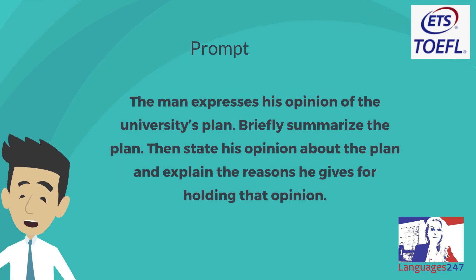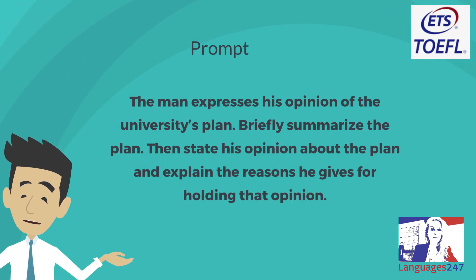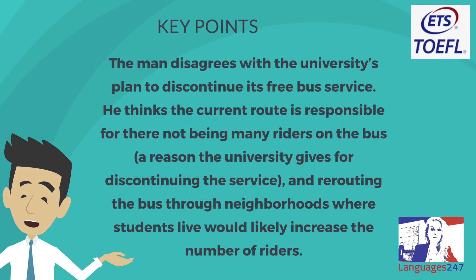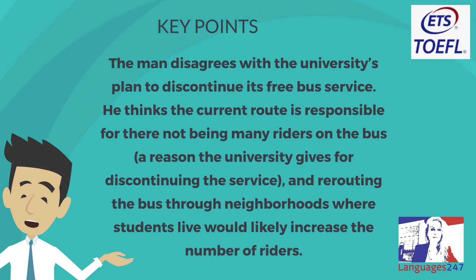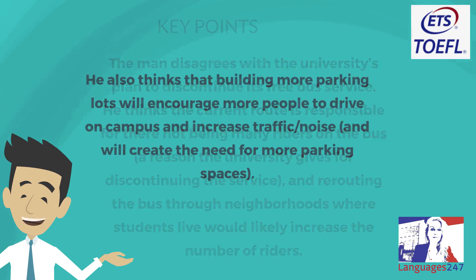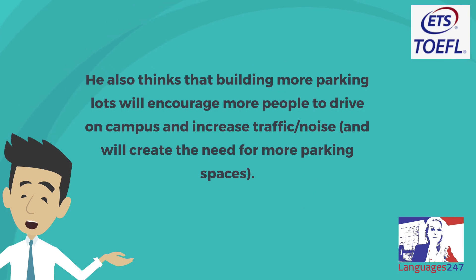Prompt: The man expresses his opinion of the university's plan. Briefly summarize the plan, then state his opinion about the plan and explain the reasons he gives for holding that opinion. Key points: The man disagrees with the university's plan to discontinue its free bus service. He thinks the current route is responsible for there not being many riders — rerouting the bus through neighborhoods where students actually live would likely increase ridership. He also thinks that building more parking lots will encourage more people to drive on campus, increasing traffic and noise, and creating the need for even more parking spaces.